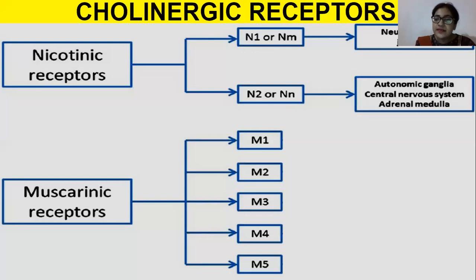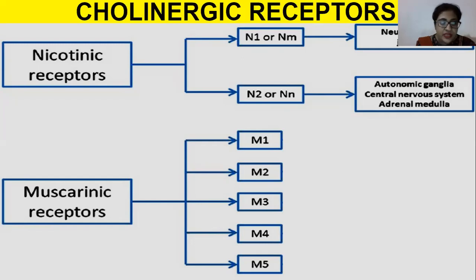Nicotinic receptors are of two types: Nm and Nn. Nm is for neuromuscular junctions, and Nn is present on autonomic ganglia, the central nervous system, and adrenal medulla. When we talked about muscarinic receptors, we learned there are five types, out of which M1, M2, and M3 are more predominantly present in our body.